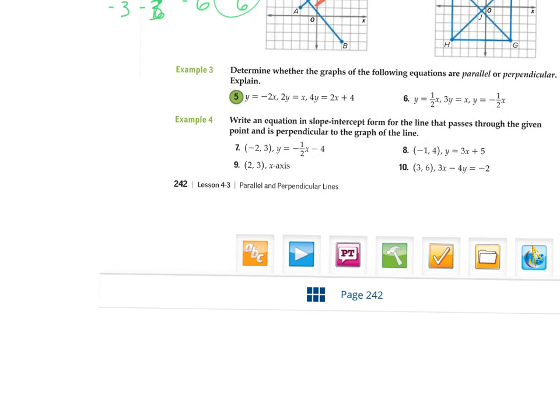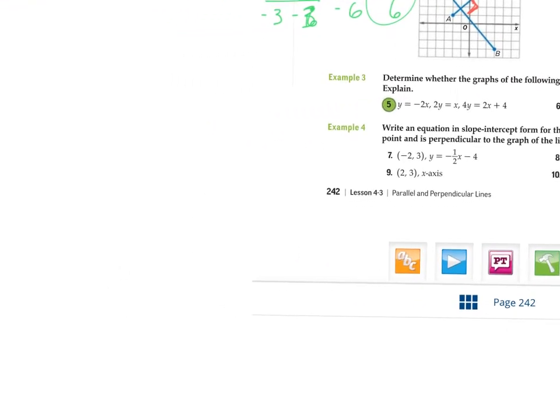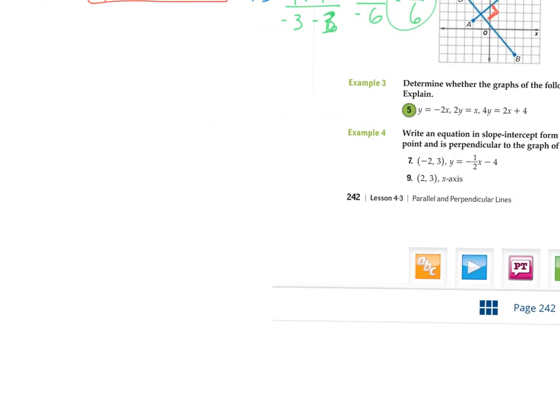Number five, it says determine whether the following equations are parallel or perpendicular and explain. Okay, so again, we're just going to do the odds because you guys can try the evens from there. So let's take a look at my first one. Here we go, y equals negative two x. Then we've got another one after that. Here it is. And we have a third one.